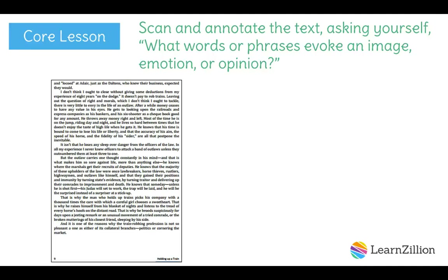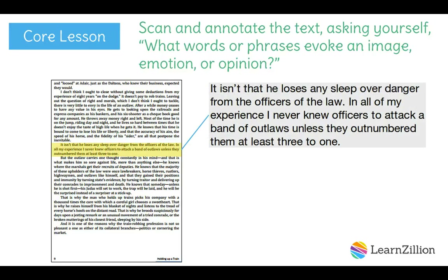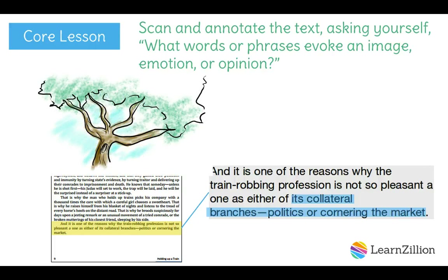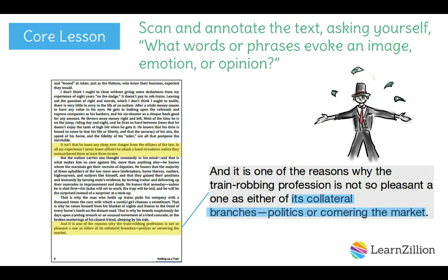On the final page, the narrator makes another jab at officers of the law: 'I never knew officers to attack abandoned outlaws unless they outnumber them at least three to one,' portraying them as cowardly or calculating. He then makes an interesting comparison, likening the train robbing profession to its 'collateral branches' — politics or cornering the market. 'Cornering the market' refers to controlling supplies of a commodity to change prices for profit. By comparing train robbing to careers in politics and finance, the narrator continues mocking those in authority and high status.